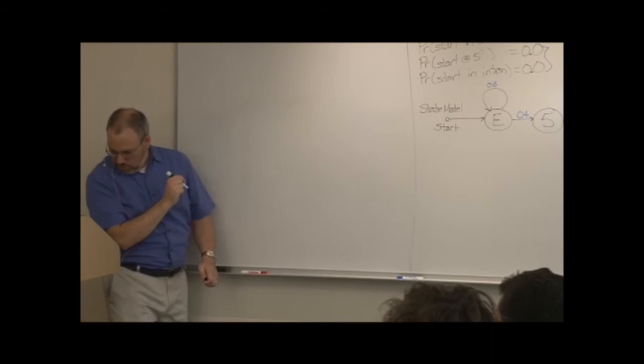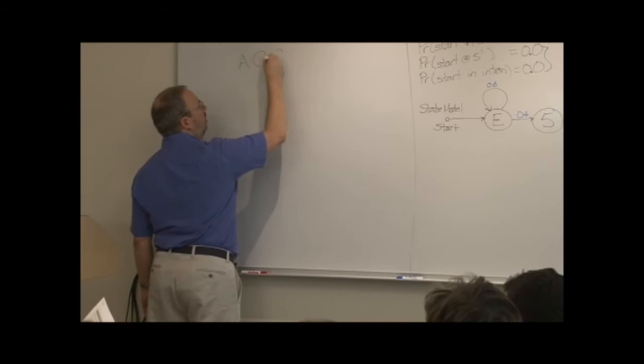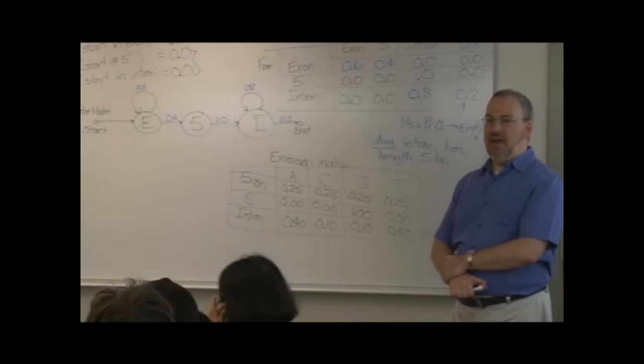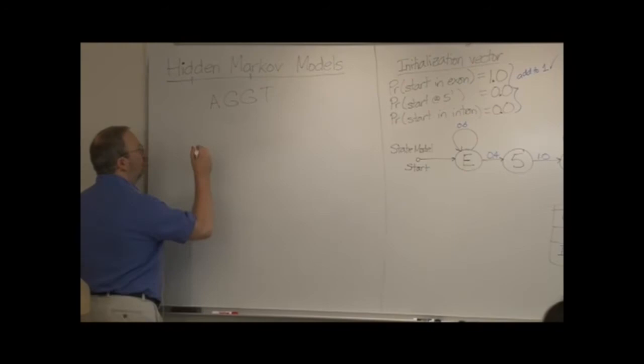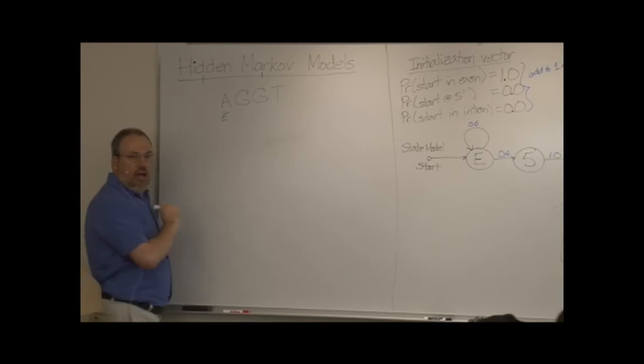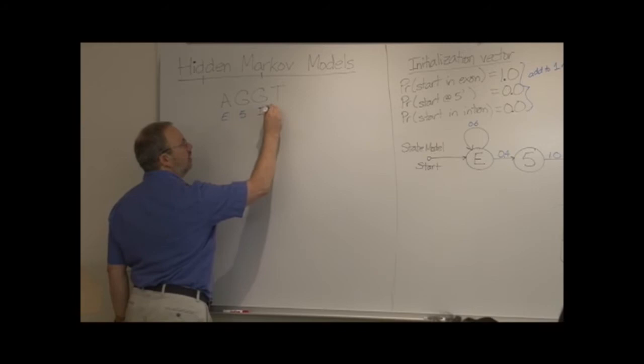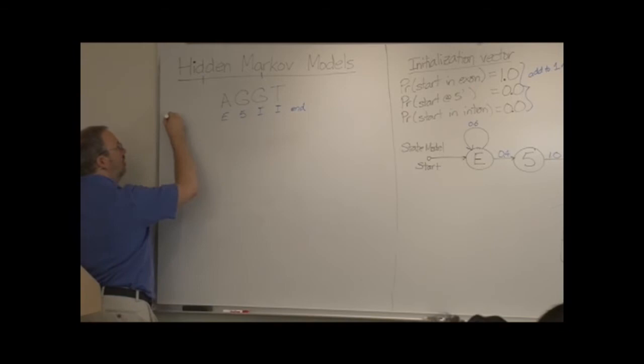So I am going to give you a particular DNA sequence. And since you are going to be doing this by hand, let's keep it short. Problem number one for you. Figure out all the possible state paths for this particular sequence. For example, this first A could be part of an exon. Perhaps this first G is the five prime splice site. These next two are introns. And then we hit the end. That is a valid state path that fits this model.